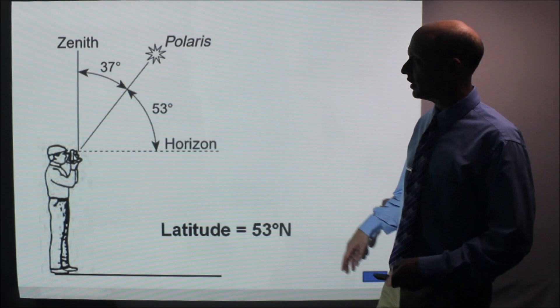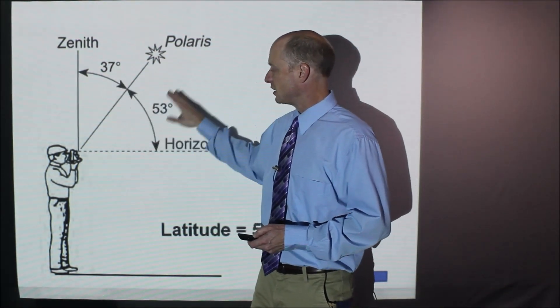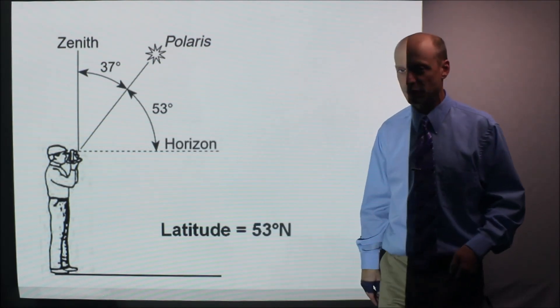And then you have this guy here, where I think they're trying to trick you. This was a multiple choice, 37 degrees. But basically, between the horizon and Polaris is 53 degrees. Therefore, his latitude is 53 degrees north.